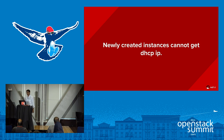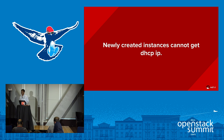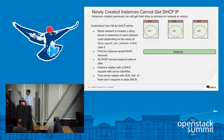Let's go to the second problem: newly created instances cannot get DHCP IP addresses. The problem is that there are a lot of previously created instances. If I try to renew their DHCP lease or reboot them, they successfully get the DHCP lease. But if I launch a new instance, it does not get a DHCP IP address. The first thing we did was explore how DHCP is configured in this environment. DHCP agents per network is set to three, meaning for each Neutron network created, there will be three DHCP server instances running in active-active mode.